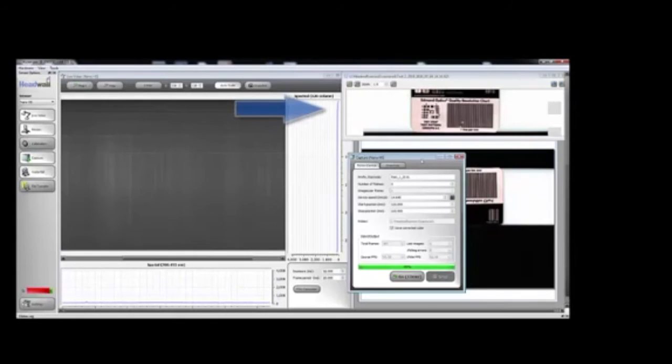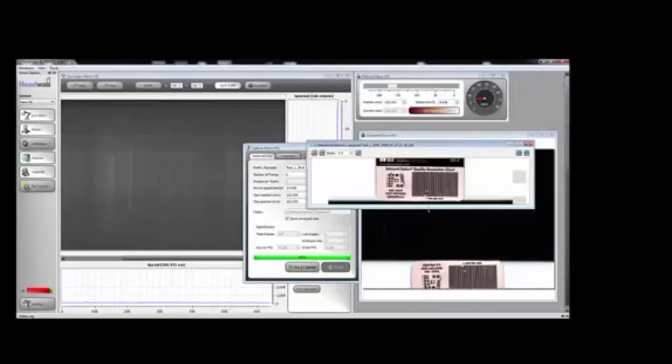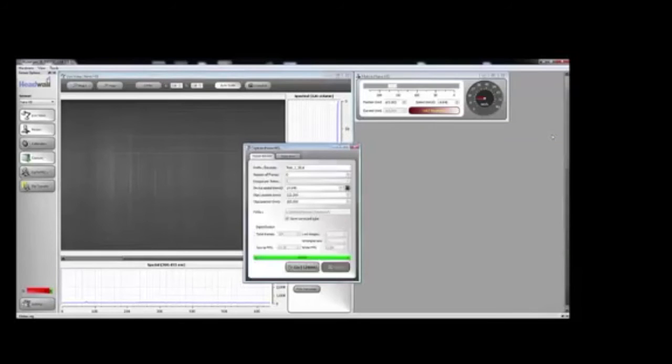When the scan completes, the preview window opens in Hyperspec. This is identical to what the cube will look like, but it is in RGB. When satisfied with the scan quality, close out the different windows and exit Hyperspec.